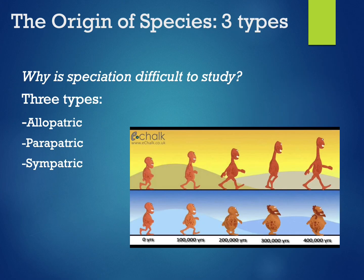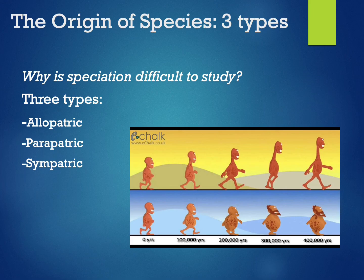With a slightly better understanding of what species actually are, we can begin to think about how different species evolve. Darwin called the origin of species the mystery of mysteries, and although researchers are getting a better handle on how speciation occurs, it is difficult to study. Microevolution — evolution within a species — is relatively easy to study in the field or in the laboratory, but macroevolution usually takes longer, making it difficult to observe in a lifetime, though it often happens too rapidly to be picked up in the fossil record. The evidence seems to support three different mechanisms for speciation: allopatric, peripatric, and sympatric.